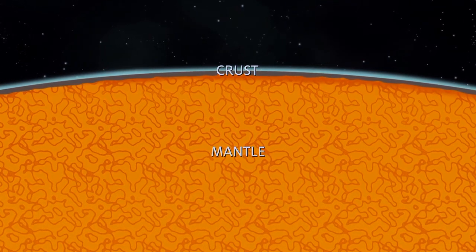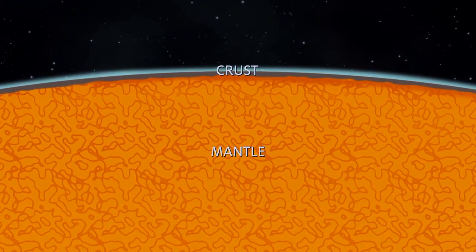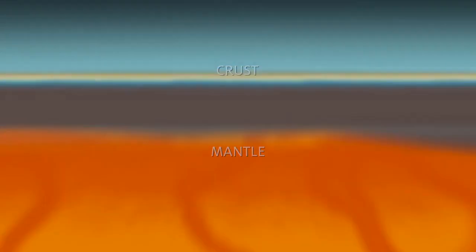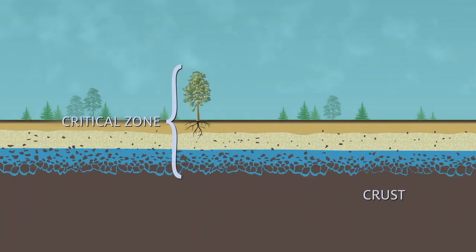On the continents, the crust can be anywhere from 12 to 40 miles thick. If we zoom in closer to the crust, we see that the Critical Zone where life happens is only a thin layer on top of the Earth's crust.